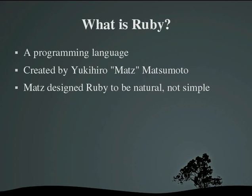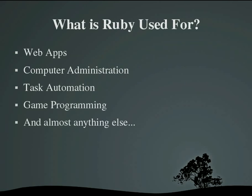Matsu designed Ruby to be natural, not simple. I think he achieved that. There are still some things that are kind of weird with Ruby, but he did a really good job. Ruby is used a lot for web applications, computer administration, task automation, game programming — almost anything else you can think of. The only thing you probably want to stay away from is things that are very computationally expensive, like processing images. Ruby's not so good at that.